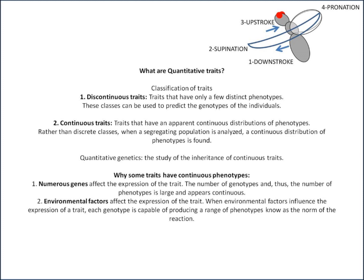The other type of trait is a continuous trait — traits that have an apparent continuous distribution of phenotypes. So rather than discrete classes, when a segregating population is analysed, a continuous distribution of phenotypes is found. The distribution resembles a bell-shaped curve for a normal distribution. These types of traits cannot be analysed in the same manner as discontinuous traits. Because continuous traits are often measured and given a quantitative value, they are often referred to as quantitative traits.